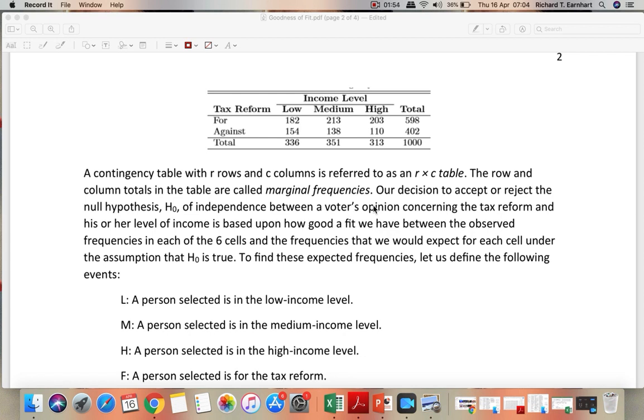The row and column totals in the table are called marginal frequencies. Our decision to accept or reject the null hypothesis of independence between a voter's opinion concerning the tax reform and his or her level of income is based upon how good a fit we have between the observed frequencies in each of the six cells and the frequencies that we would expect for each cell under the assumption that the null hypothesis is true.